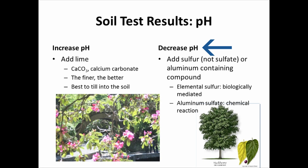Decreasing pH is much more complicated, and I often recommend against it, because high pH soils tend to be built out of limestone particles — calcium carbonate — and are often very difficult to lower the pH of. To decrease soil pH, we often recommend sulfur — not sulfate, but elemental sulfur, which is a yellow compound — or something containing aluminum, usually aluminum sulfate. Aluminum sulfate causes an immediate chemical reaction which will lower the pH.